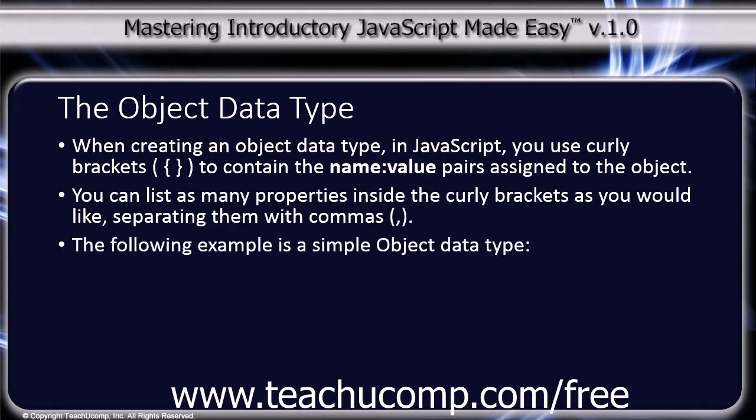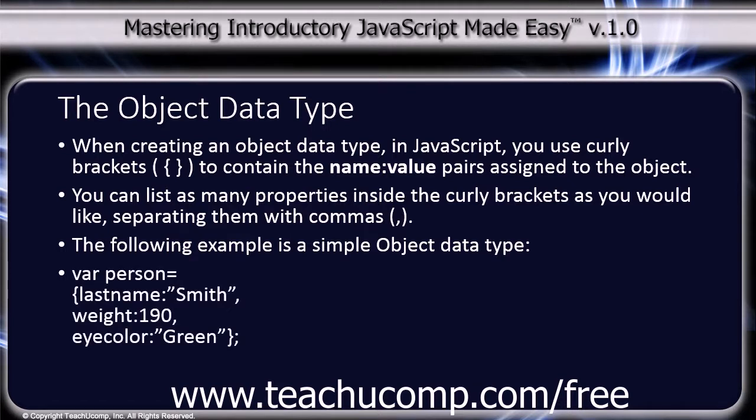So the following example is a simple object data type. We start with: var person = { lastName: "Smith", weight: 190, eyeColor: "green" };